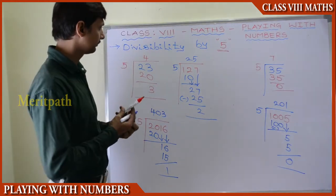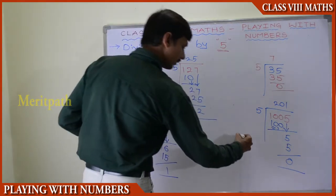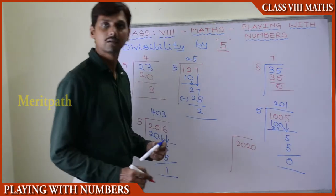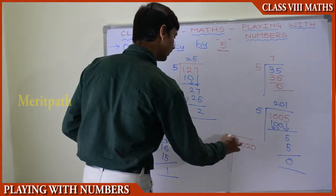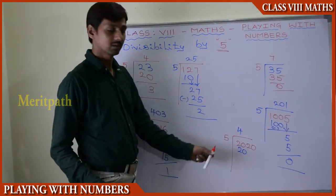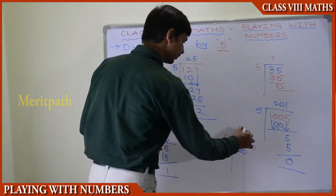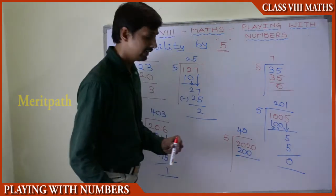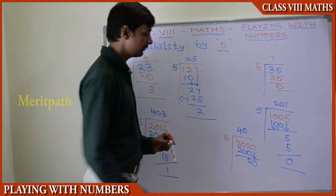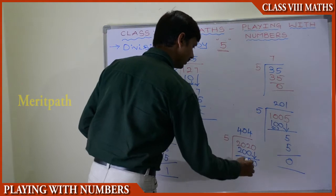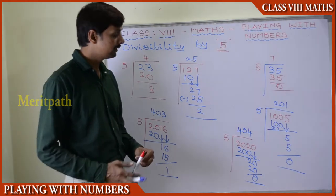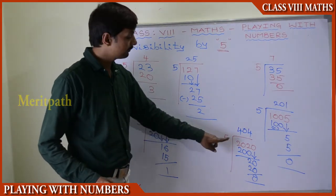Let us take 2,020 and divide by 5. 5 goes 4 times into 20 giving 20, with 0 remainder. Bringing down the next digits: 5 goes 4 times into 20 giving 20, remainder 0. So we get 0 as the remainder, and 2,020 is divisible by 5.